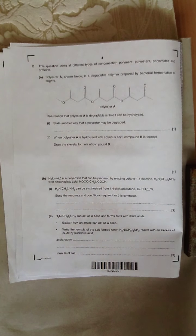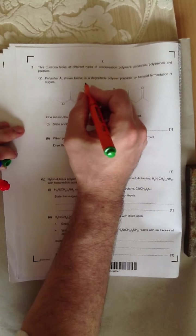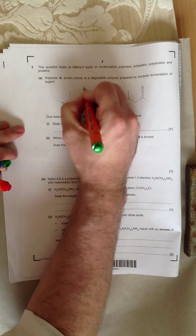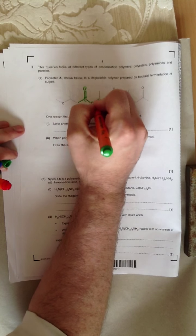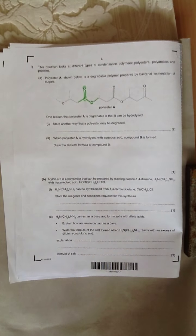And we know it's a polyester because the functional group is an ester group, and the ester group is C double bond O, bond O, and either side of the carbon and the oxygen are carbon-containing groups.